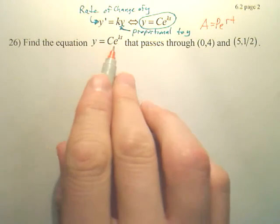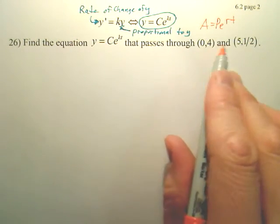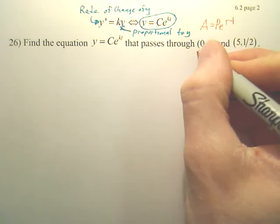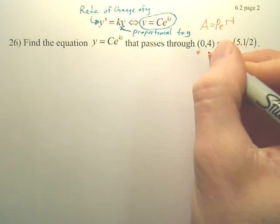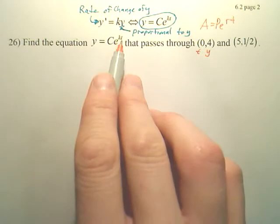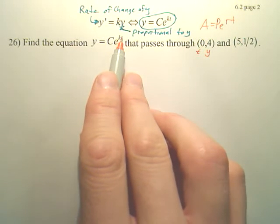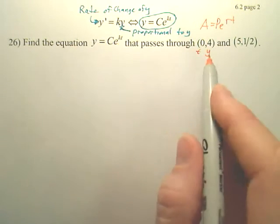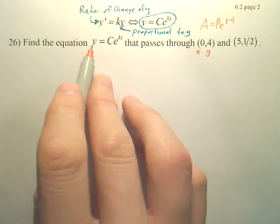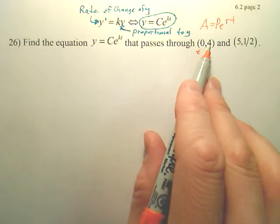So, find the equation in this form that passes through these two points. Now, what you need to first understand is this is your time and this is your y value. Normally it's x and y, but in this situation, it's t. t is your x. So it's t,y and t,y. In order to find the equation in this form, the first thing I want to do is plug in 0 and 4.